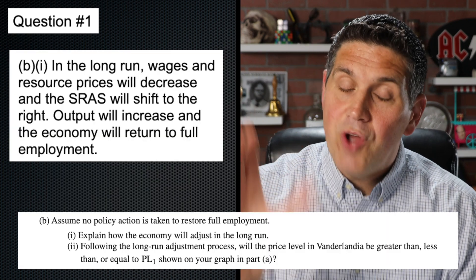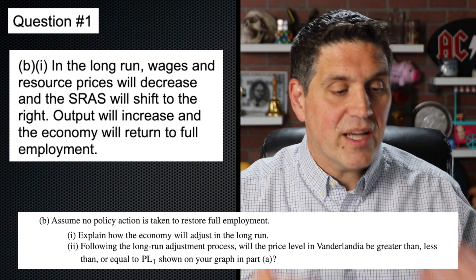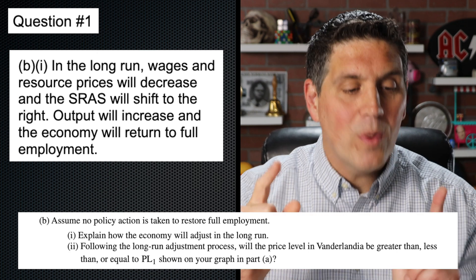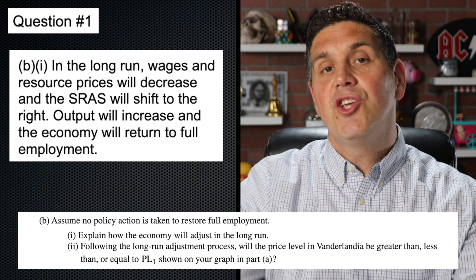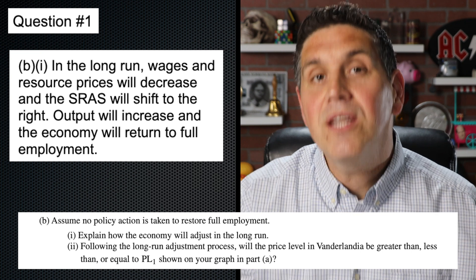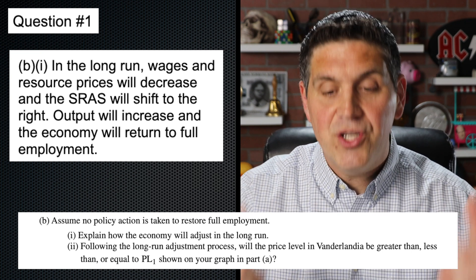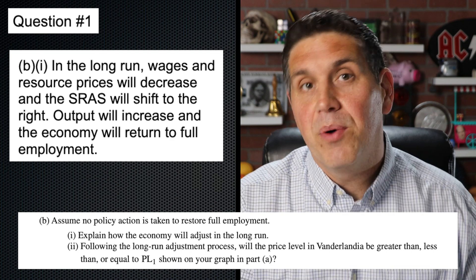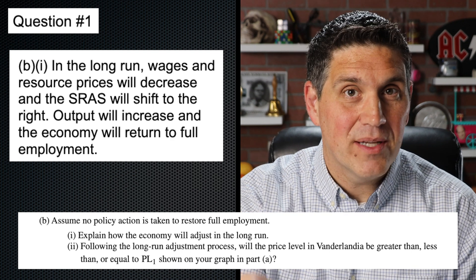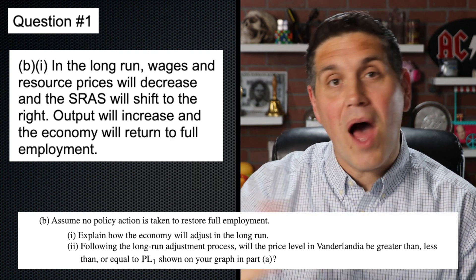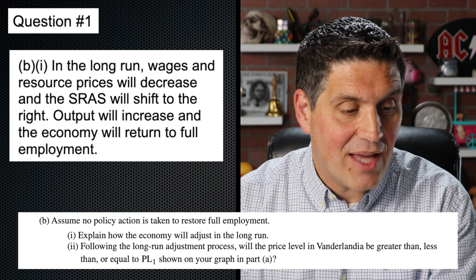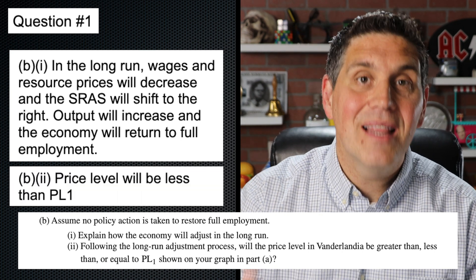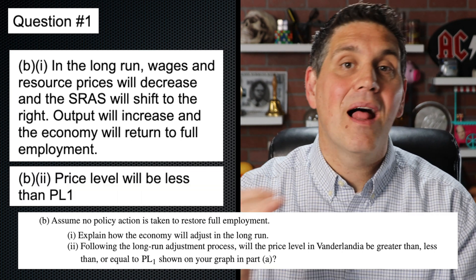In B, it says that there's no policy — what's going to happen? And you had to explain this in words. Remember, it was an explain. So what's going to happen? The short-run aggregate supply curve is going to increase because wages and prices are going to fall when there's a negative output gap. And it didn't ask you to label it, so don't actually draw that shift. You just had to explain that shift and say that the price level is less than PL1.